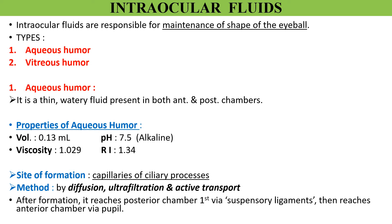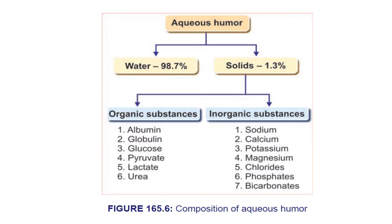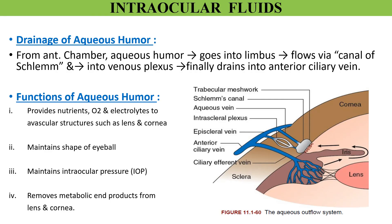After aqueous humor is formed, it reaches the posterior chamber of the eye through the suspensory ligaments, then flows to the anterior chamber via the pupil. Aqueous humor is made up of 98 percent water and around 1.3 percent solids. Its composition is similar to plasma except that it has less protein content, and high concentrations of ascorbate, pyruvate, and lactate. Aqueous humor from the anterior chamber drains into the anterior ciliary vein after passing through the canal of Schlemm. This topic will be studied further when learning about glaucoma.